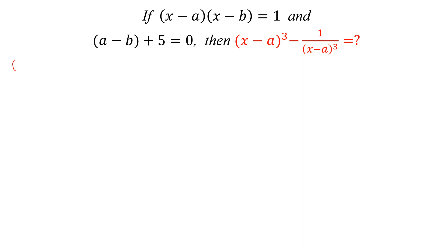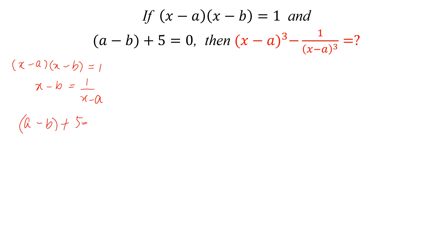From the question, we know that (x - a)(x - b) = 1, so we can write x - b = 1/(x - a). Also, a - b + 5 = 0, so we can write a - b = -5 and -a + b = 5.